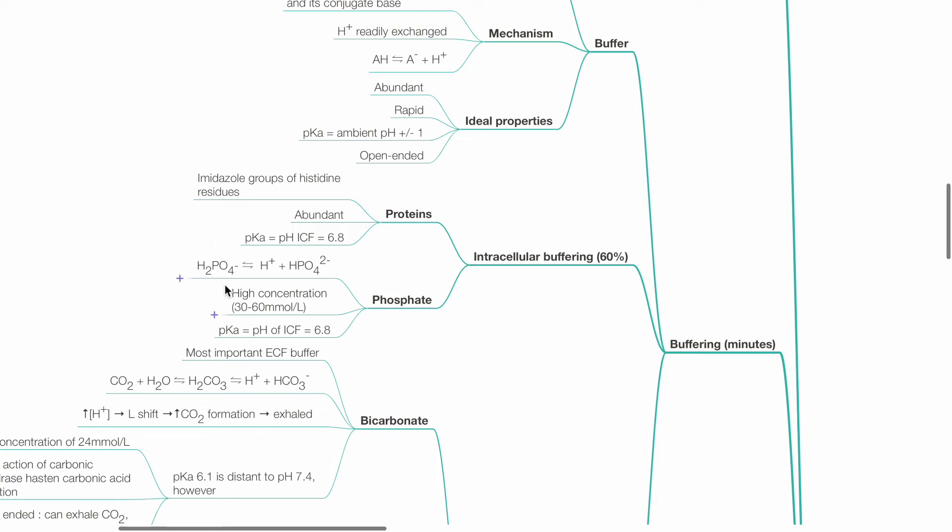H2PO4− reversibly dissociates to H+ and HPO4²−. There is high concentration of phosphate in a cell of 30 to 60 millimole per liter. Its pKa is also 6.8.